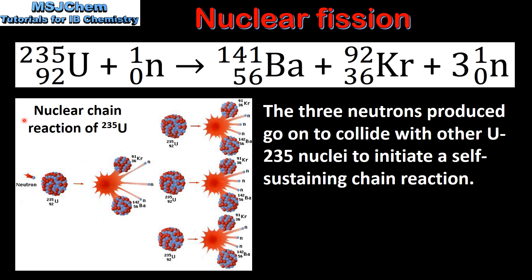In this diagram we have the nuclear chain reaction of uranium-235. In each fission of a uranium-235 nucleus, three neutrons are produced.